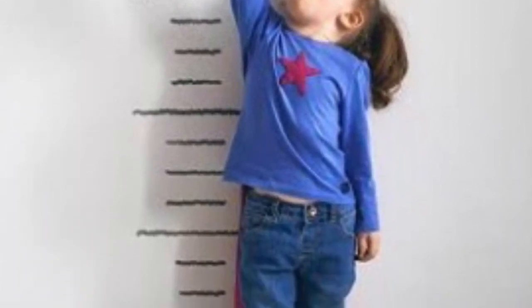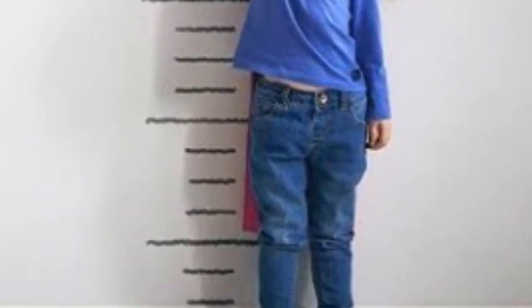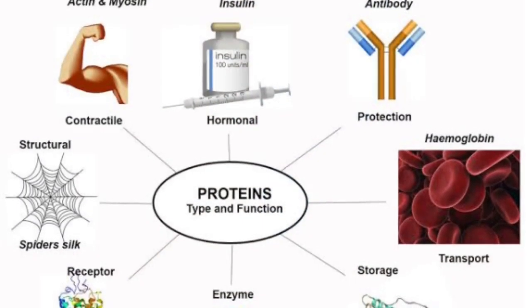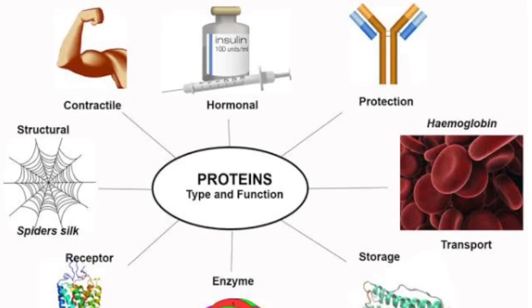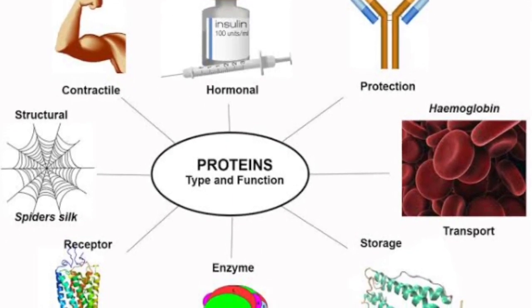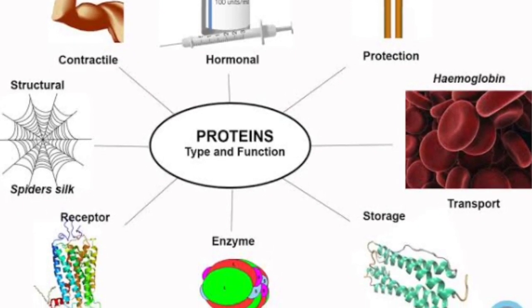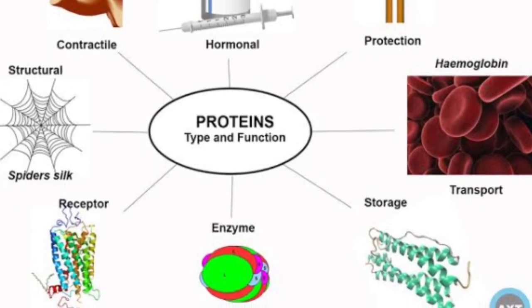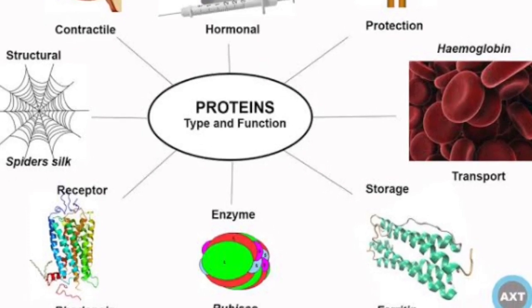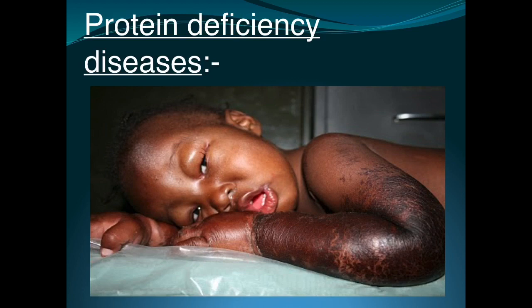Functions of proteins: they are essential for the growth and development of the body and for the repair of tissues. They are constituents of several enzymes, hormones, antibodies, plasma, and hemoglobin. They maintain osmotic pressure and thus maintain fluid balance in the body, and they also provide energy — one gram provides four kilocalories.